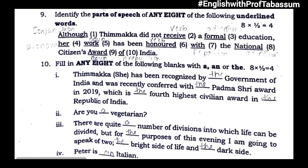Bit number nine: identify the part of speech of any eight of the following underlined words. 'Although' — conjunction. 'Timakka did not receive' — 'receive' is a verb. 'A formal education' — 'formal' is an adjective. 'Her' — pronoun. 'Work' — noun (sometimes also used as a verb). 'Has been honored' — 'honored' is a verb. 'With' — preposition. 'National' — adjective. 'Award' — noun. 'Of' — preposition.